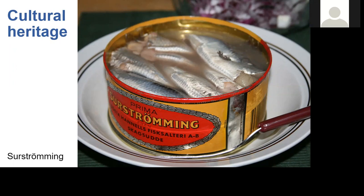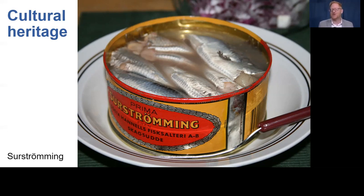Similarly, research by Neuigard has argued that the consumption of surströmming — the Swedish fermented herring — helps construct a traditional rural identity. Eating this fermented fish positions you as a rural consumer with rural culture in opposition to modern urban values.